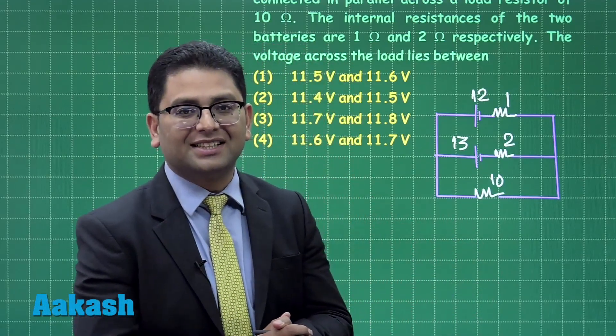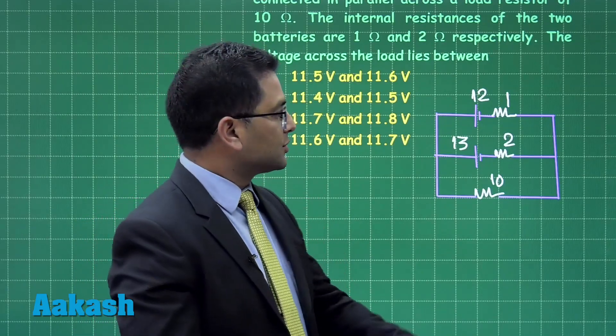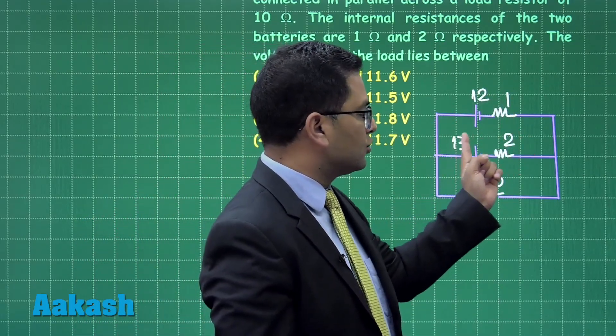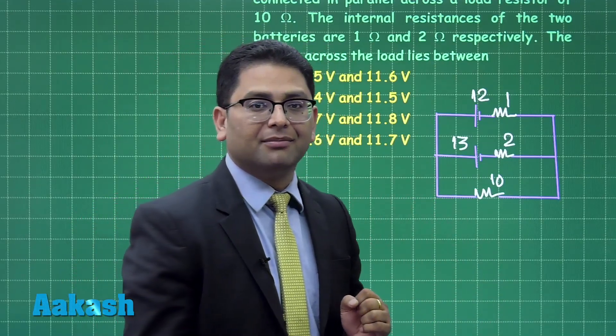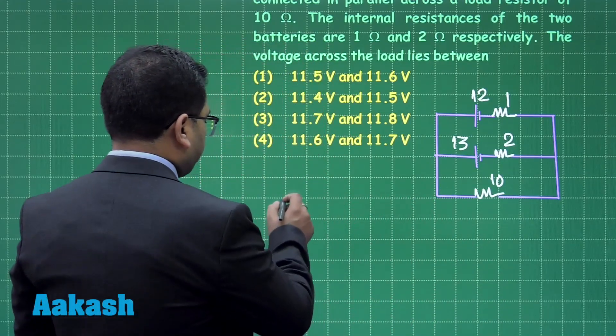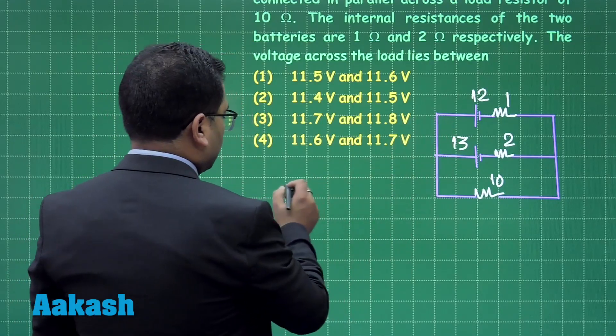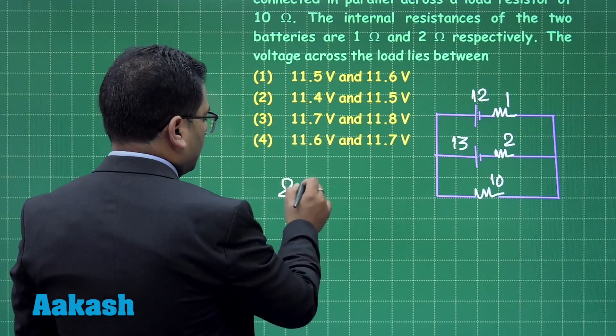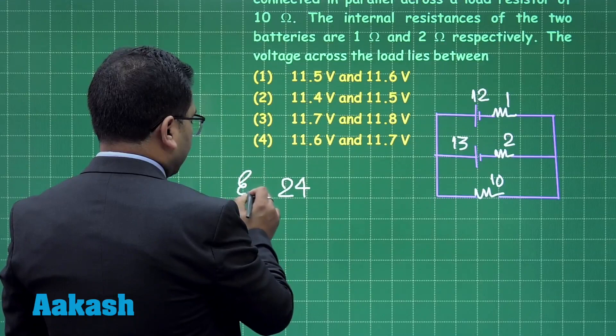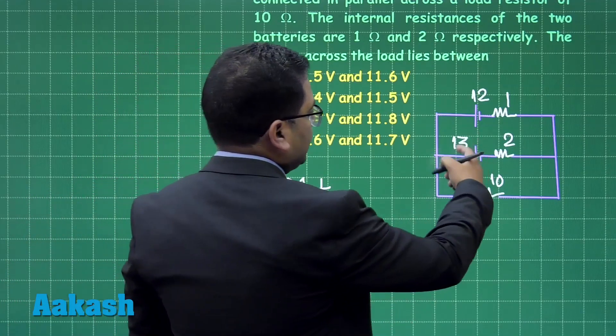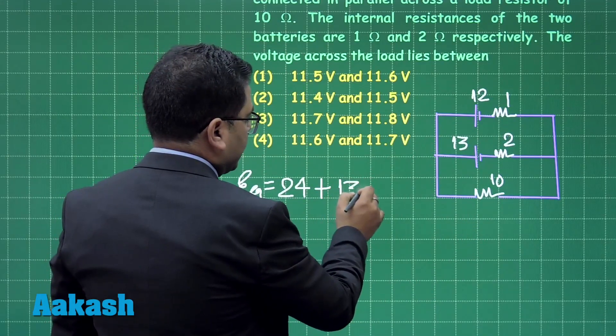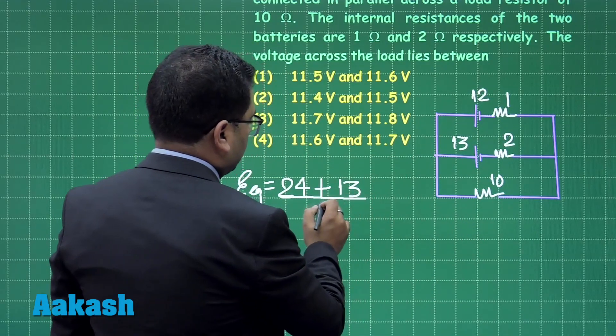Well, I can solve it by using KVL, but this one is so straightforward you can use the concept of combination of cells which are in parallel. So if this is e1, r1, e2, r2, what would be the equivalent emf? So that is going to be, say, e1*r2, that's 12 into 2 is 24. This is the equivalent emf I am calculating plus e2*r1, that's 13, by r1 plus r2, that's 3.